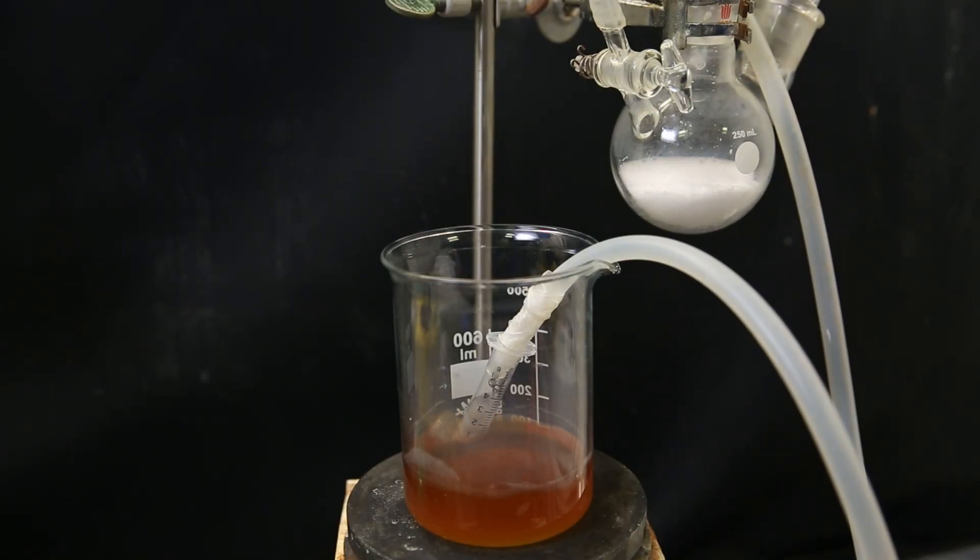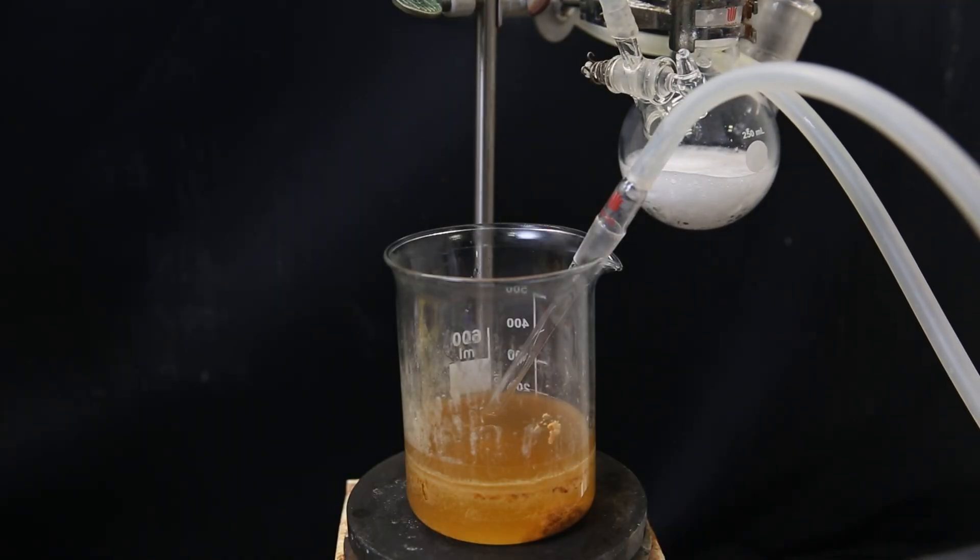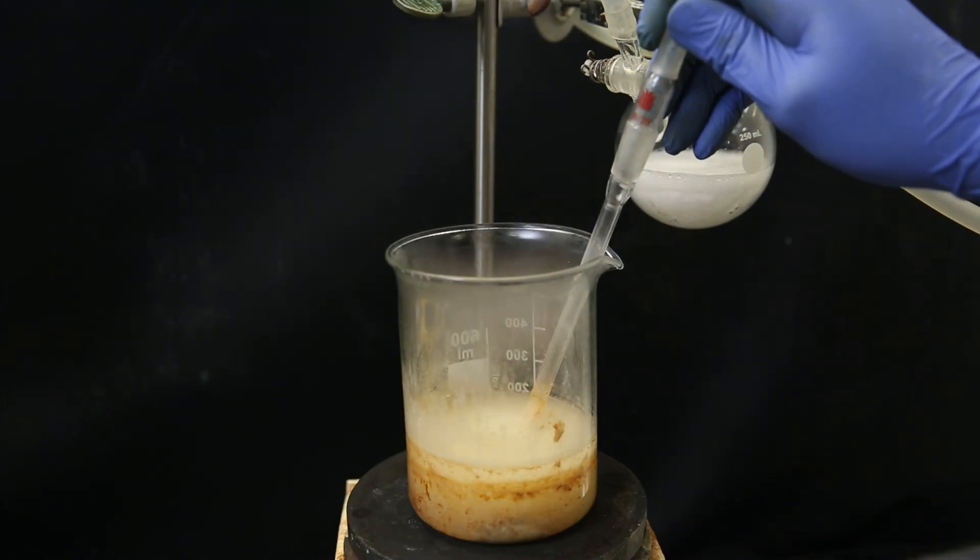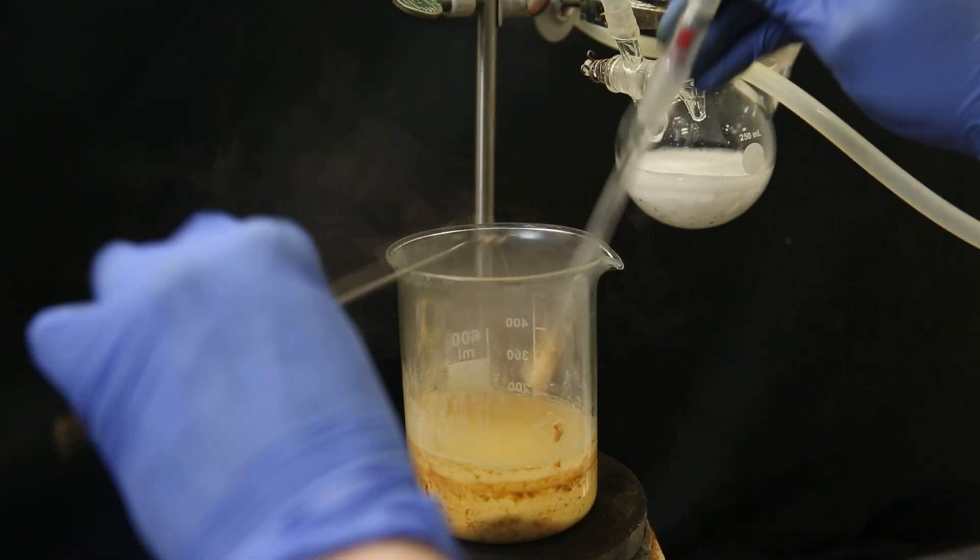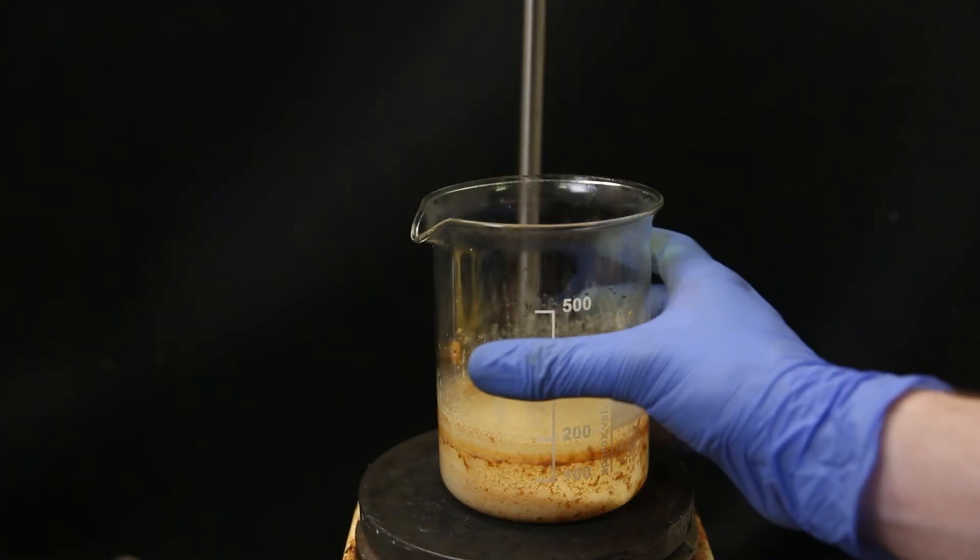Unfortunately the stuff that precipitates clogs the tube, so later I swapped it out for a glass one with a bigger hole, with a bigger diameter. It seems that first some impurity precipitated, because later on, it started to precipitate a more pure and white product. Either way, when nothing more precipitated, I stopped the reaction, and disassembled the gas generator.